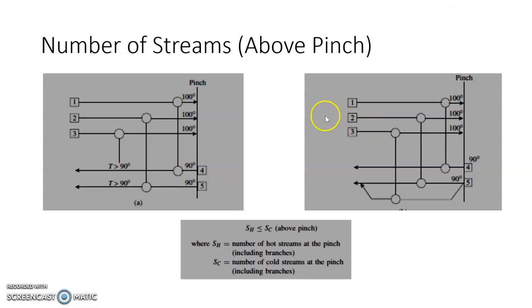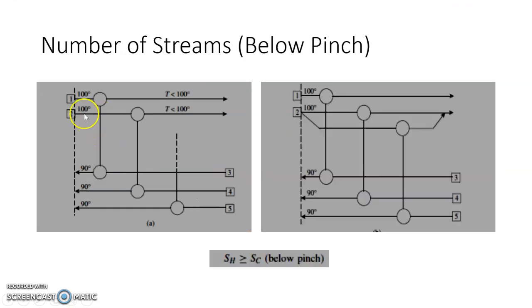Similarly, below the pinch, if we have three cold streams and two hot streams, every cold stream at the pinch requires a corresponding hot stream at the pinch. Otherwise, the temperature difference would fall below delta T minimum. Hence, below pinch we require the number of hot streams to be greater than or equal to the number of cold streams — we split hot streams when the numbers are unequal. We split cold streams above pinch and hot streams below pinch.